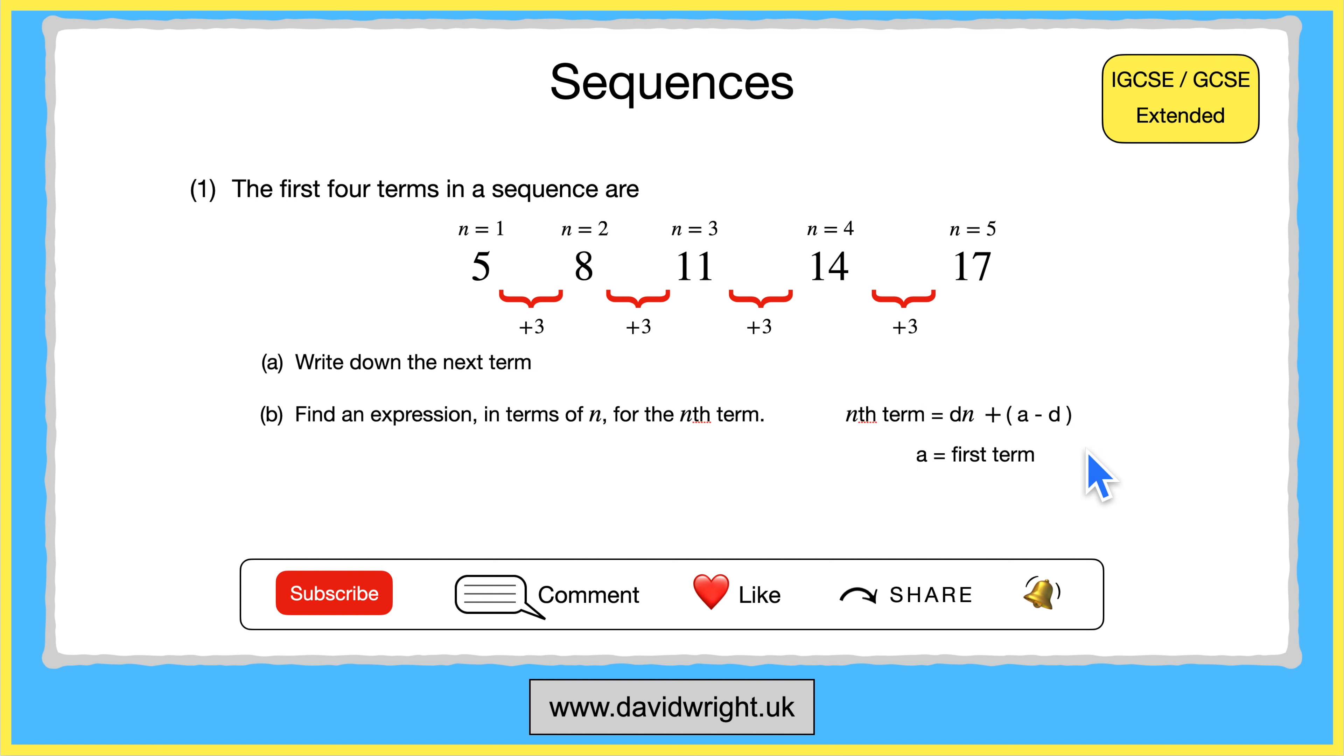a is the first term which is 5 and d is the difference between the terms which we found to be 3. So we can use these numbers to find the nth term.